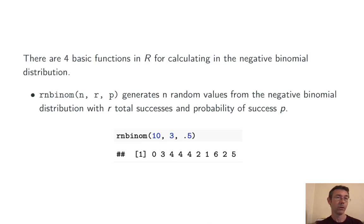For instance, rnbinom(10, 3, 0.5) generates 10 values where each one represents the number of failures before we get three successes where the probability of success on each individual trial is 0.5. So here in the first simulation we had zero failures, then in the second we had three failures, then in the third simulation four failures, all before three total successes in each run.